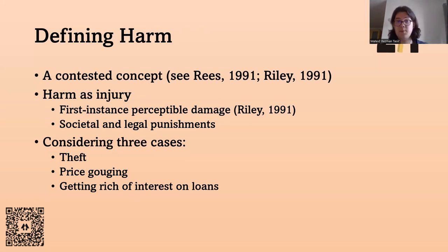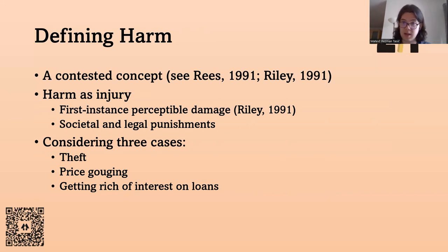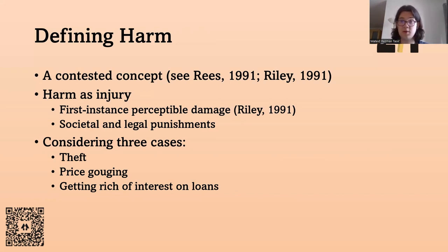There are three cases that show how this is ultimately still a question and how some cases are open-ended. The first example is theft — a very clear example of first instance perceptible damage. If you steal some money from someone else, this is obviously a first instance harm: your direct action caused harm to someone else, you took someone's money and someone has less money. There is no intermediary — this is a direct harm, and it is perceptible. Theft is therefore a very clear case of when someone's liberty can be restricted.